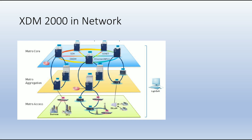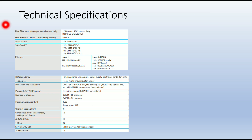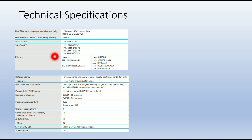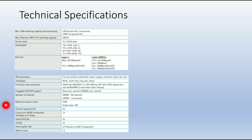Here you can see the XDM 2000 in the network and its technical specifications: maximum TDM switching capability is 120 Gbps, maximum Ethernet switching capability is 400 Gbps, and there are 12 service slots I1 to I12 each supporting a maximum of 10 Gbps. SDH capacity: 192x STM-1, 192x STM-4, 14x STM-16, and 12x STM-64. Ethernet layer 1 and layer 2 services are supported. Topology options include mesh, multi-ring, ring, star, or linear. These are the protection schemes, number of channels, maximum distance, and continuous 2R transponder specifications supported by the XDM 2000.